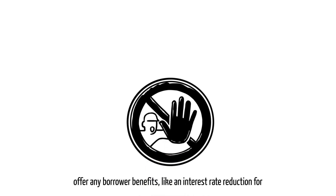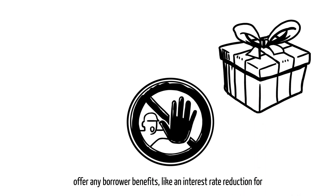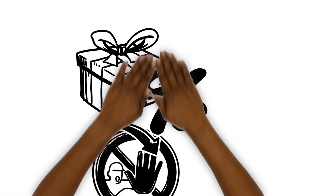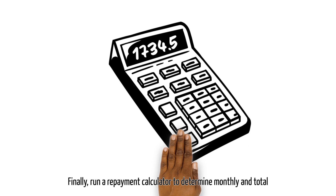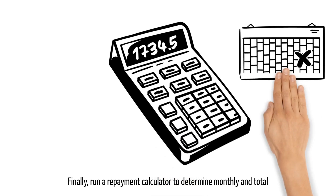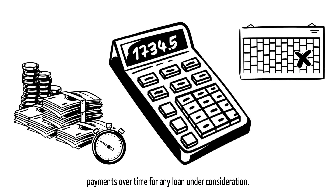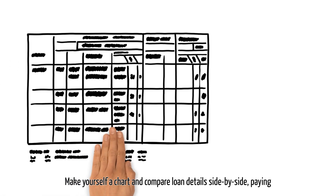Are there annual or aggregate borrowing limits? Does the lender offer any borrower benefits, like an interest rate reduction for automatic payments? Finally, run a repayment calculator to determine monthly and total payments over time for any loan under consideration.